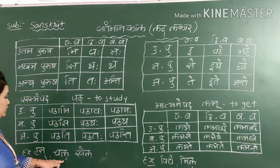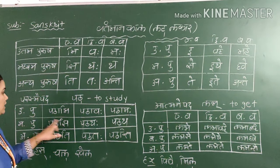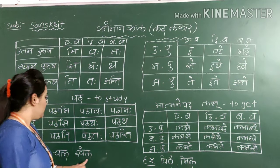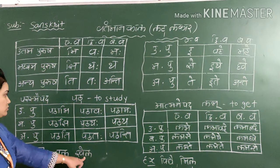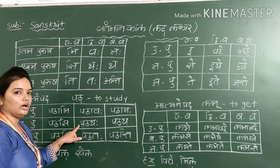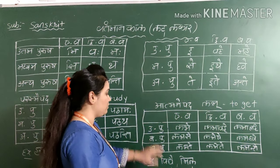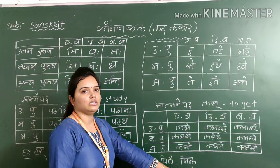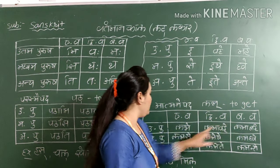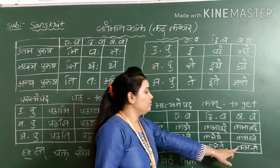Now we will take another word — 'chala'. So: chalami, chalavaha, chalamaha. Chalasi, chalathaha, chalatha. Chalati, chalathaha, chalanti. Here also, khela: khelami, khelavaha, khelamaha. Same, we have to add in Atmanepad. Now we will see the word 'mila'. Mila means to meet. So: milae, milavahe, milamahe. Milase, milathe, miladwe. Milate, milate, milate.